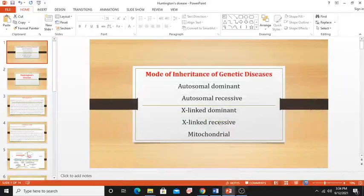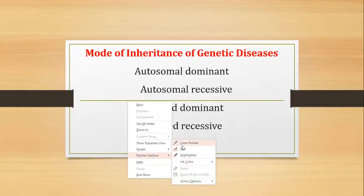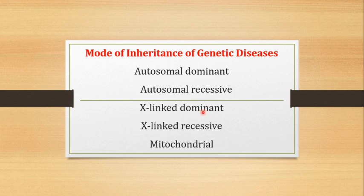Bismillahirrahmanirrahim, and welcome back to this next video in the series on human genetics. In the last videos I told you that the mode of inheritance of genetic diseases is usually classified into five classes: autosomal dominant, autosomal recessive, X-linked dominant, X-linked recessive, and mitochondrial genetic diseases. So genetic diseases are broadly classified into these five classes.